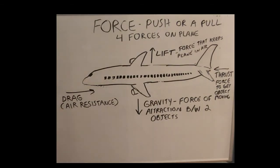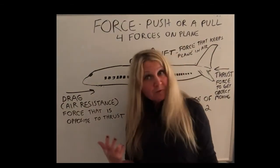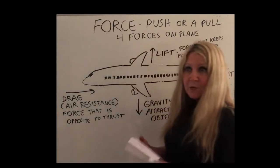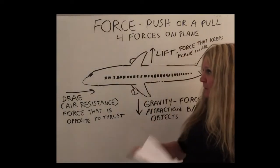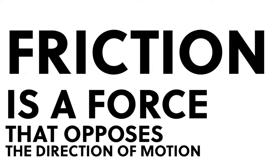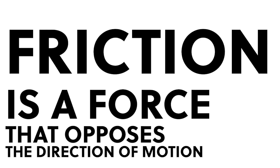So drag is air resistance. It's a form of friction because the force of friction would be higher. So the friction is something, is a force. And this is a type of friction, drag. So this is air resistance and it's a type of friction.